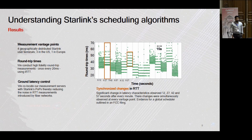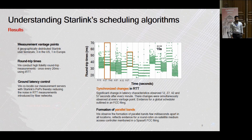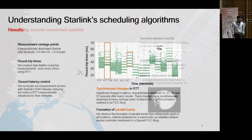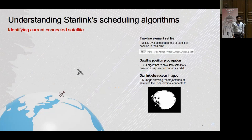We also observed the formation of parallel bands within each 15-second slot, but I won't be talking about those in detail — we have information about it in the paper. Coming back to the same question: we know we can only be connected to one satellite out of the roughly 40 available on average at any point in time, but we still do not know the identity of the satellite we're connected to.